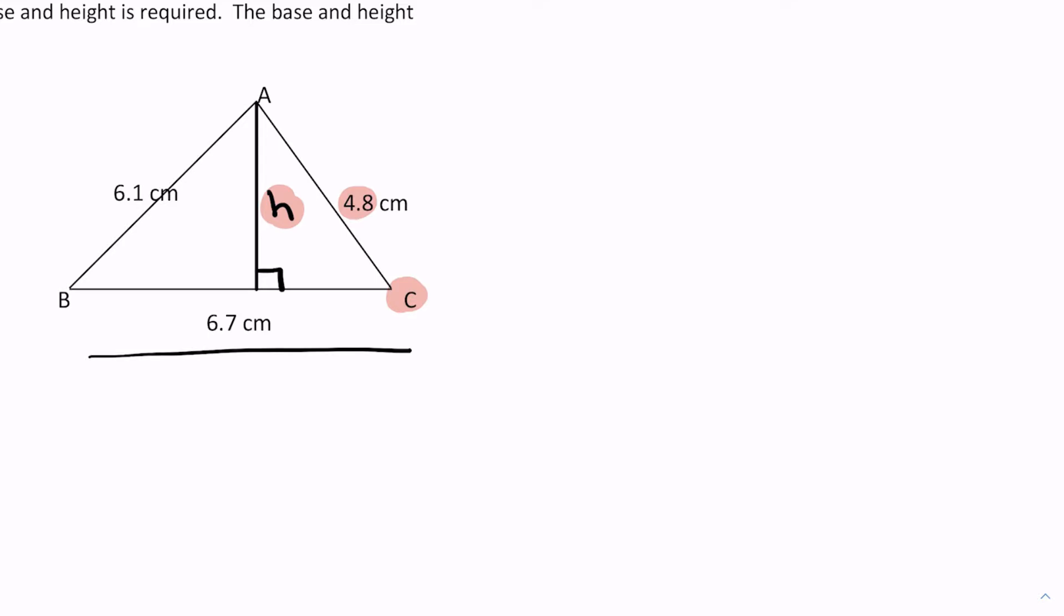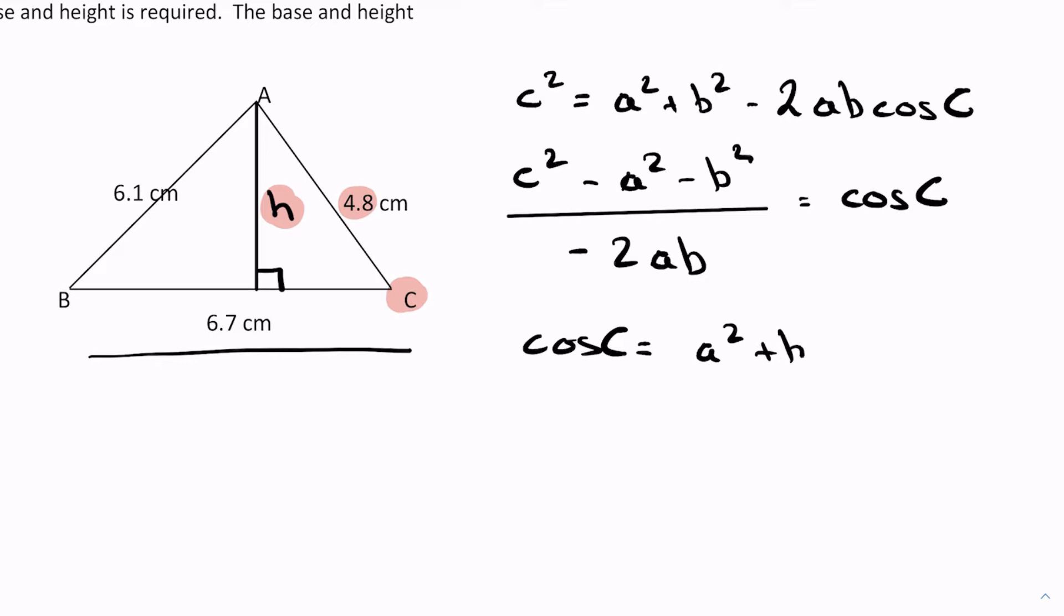So I'm gonna write it out in full and then rearrange it: c² = a² + b² - 2ab cos C. I'm gonna rearrange this formula for cosine C, so I'm gonna get c² minus a² minus b² all divided by -2ab is equal to cosine of C. So cosine of C is equal to a² plus b² minus c² over 2ab.